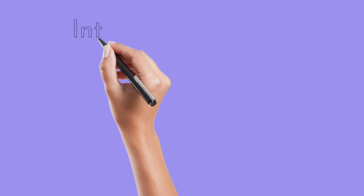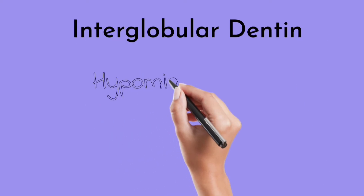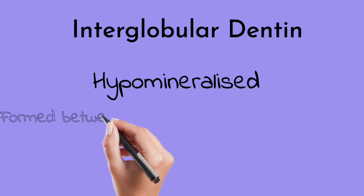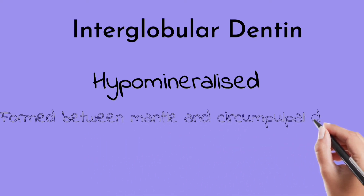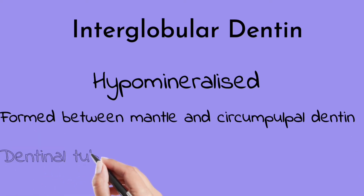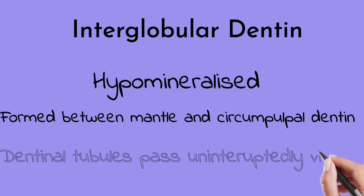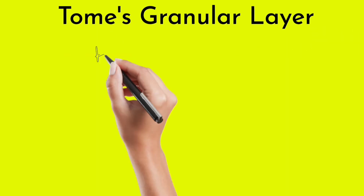Interglobular dentine is the dentine formed between the mantle and the circumpulpal dentine. It is a hypomineralized structure, and the dentinal tubules pass through it uninterruptedly.